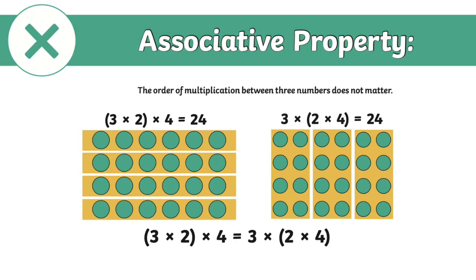Associative: the order of multiplication between three numbers does not matter. Groups of factors can be multiplied together and the answer will stay the same, even if you change the grouping of factors.